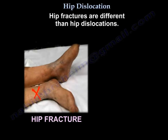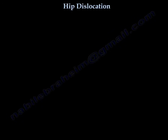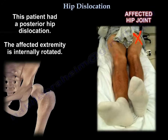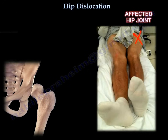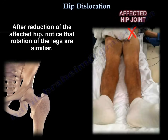Hip fractures are different than hip dislocation. Notice that the affected extremity is shortened and externally rotated with a hip fracture. This patient had a posterior hip dislocation — the affected extremity is internally rotated. After reduction of the affected hip, notice that the rotation of the legs are similar.